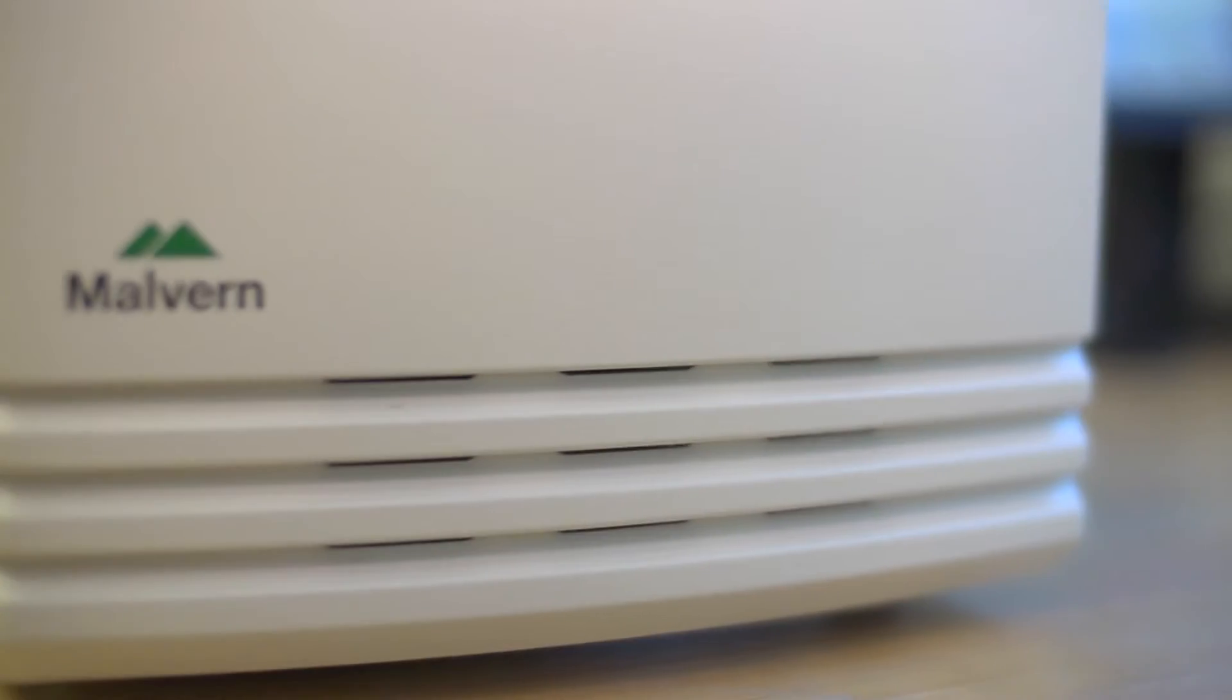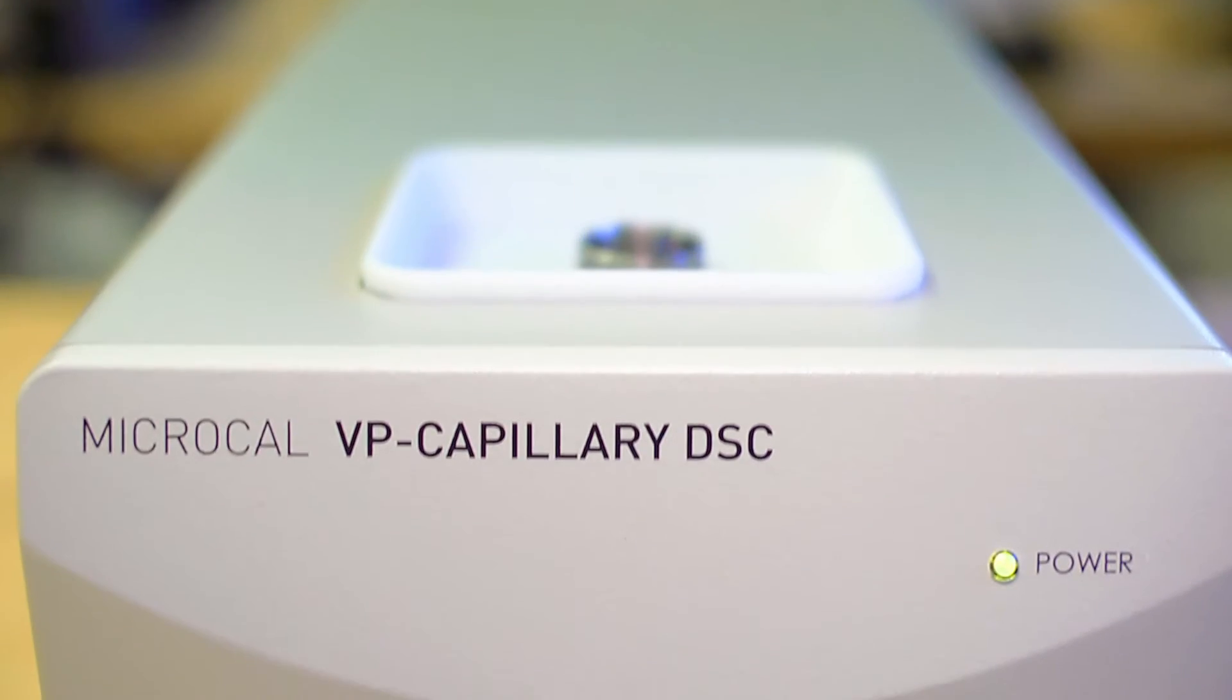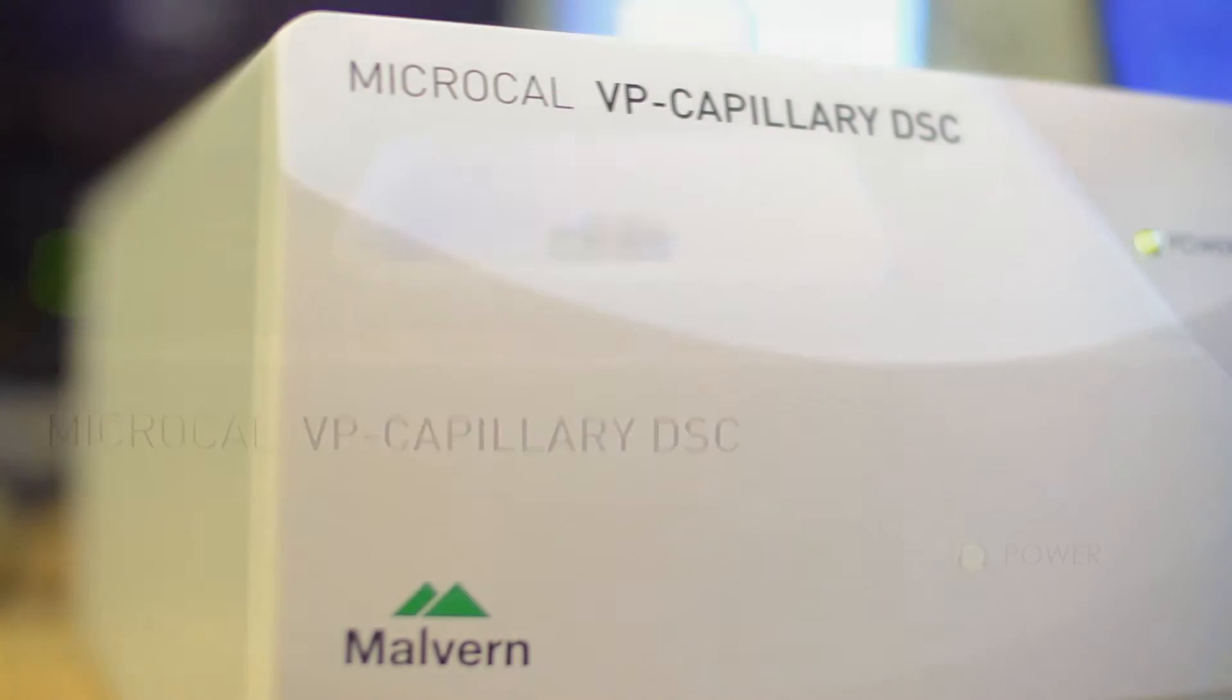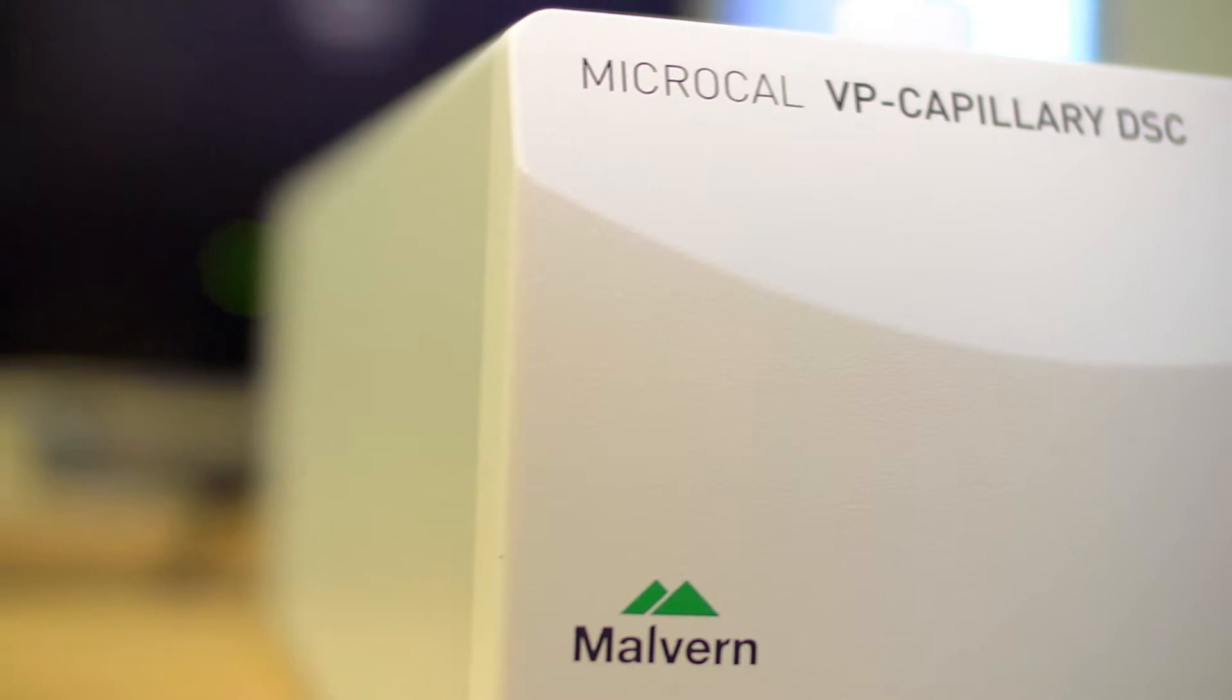The manual MicroCal VP Capillary DSC delivers the ability to study molecules in their native state without labeling and can be used with colored solutions or turbid suspensions, measuring tight binding constants of up to 10^20 M^-1.